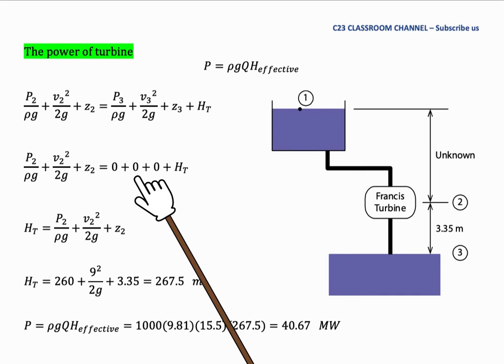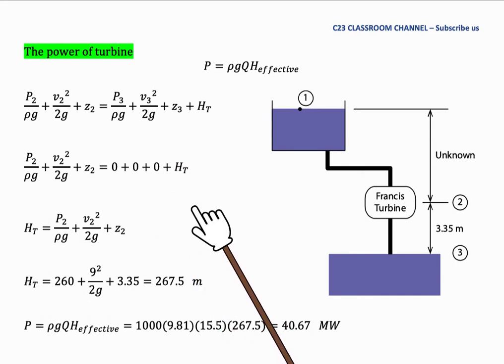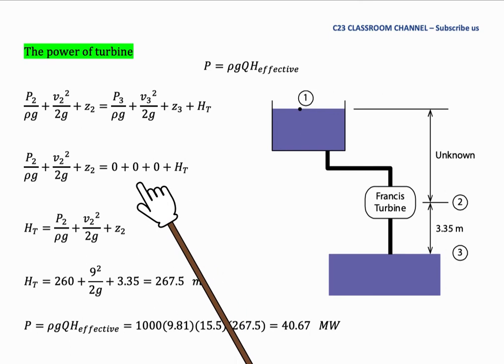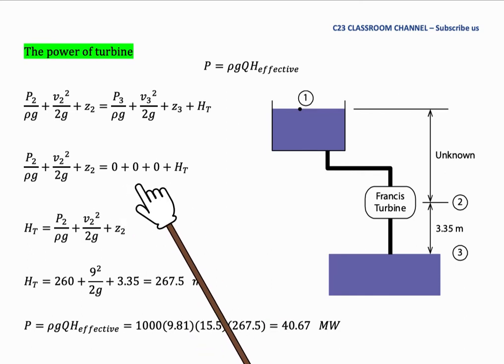The velocity at three here is equal to zero and the level at point number three is equal to zero. So in the right term here, we only have the head of turbine. Then we could rearrange this equation like this. Then we could substitute the value from the question. The pressure height is 260 meters.